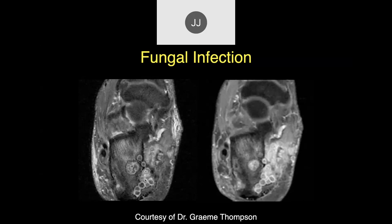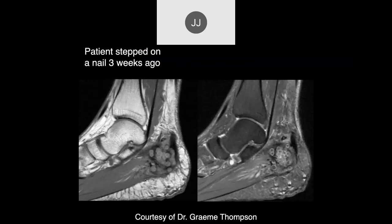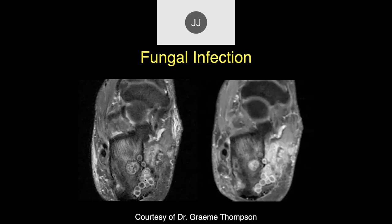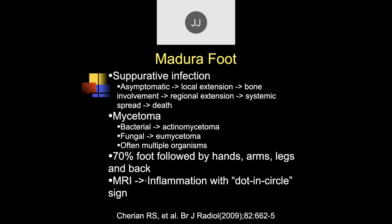The three-week history seems inaccurate — we rarely get accurate history, and this was probably more like three months or more. This falls under the rubric of Madura foot. These are typically somewhat chronic, occurring in tropical areas with a lot of moisture, usually due to fungal infections but also atypical bacterial infections like actinomycosis. Seventy percent are in the foot, probably because people are barefoot. The dot-and-circle sign is a characteristic MRI finding of Madura foot.